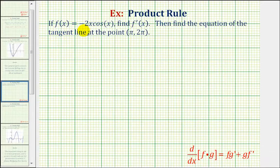If f of x equals negative two x cosine x, we want to find f prime of x, or the derivative function, and then find the equation of the tangent line at the point pi comma two pi.